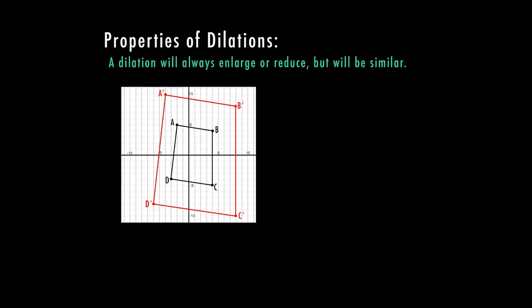Let's go ahead and try a different way on the next one. My next example, I have a dilation that will always enlarge or reduce but will be similar. You can see here that my original quadrilateral ABCD on the inside is smaller than ABCD prime, but it is the exact same shape. So let's see if I can figure out my scale factor based on my ordered pairs from the graph.